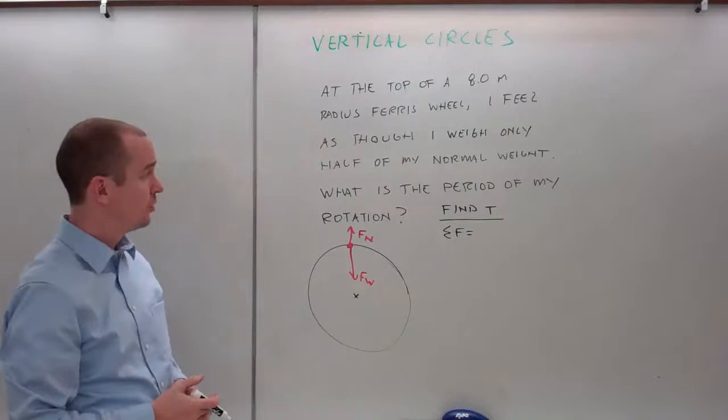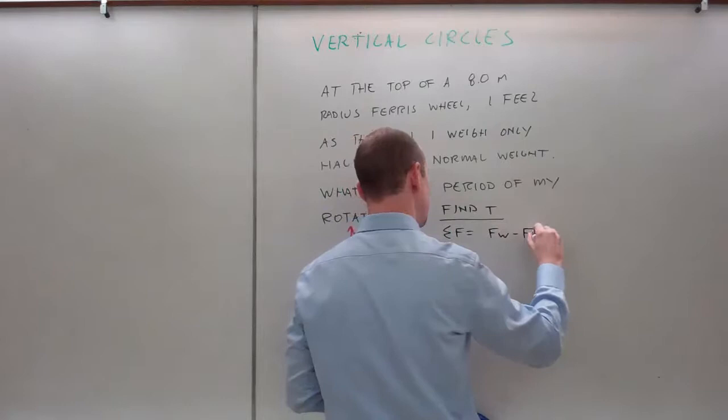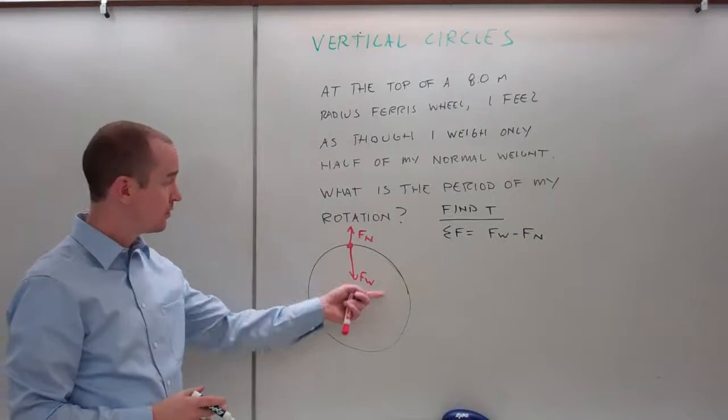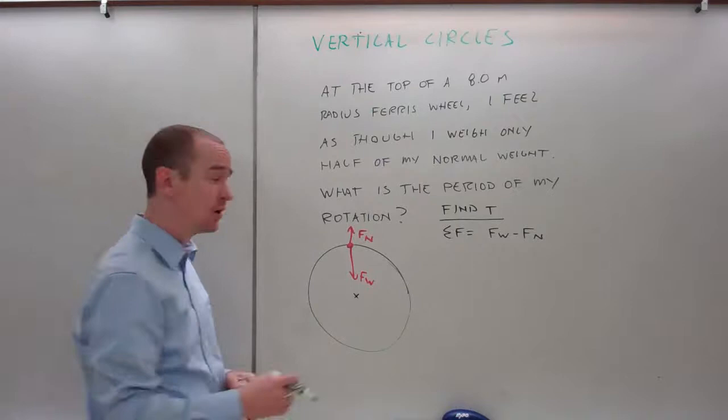Alright, sum of the forces equation. Well, here's the center of my circle. So, I start with Fw minus the normal force. Notice, towards the center of the circle is positive. Alright, any group of forces is equal to Mv squared over R.